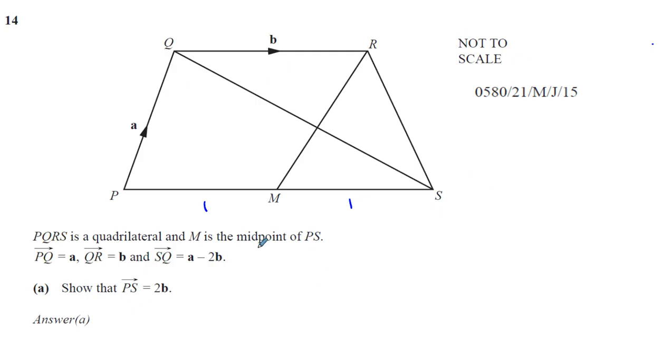Show that PS is equal to 2B. Now PS, I want to go from P to S, I can go from P to Q, and then I can go from Q to S. I know what PQ is, it's A. And I know that if SQ is A minus 2B, QS is the opposite of that. It's negative of that.